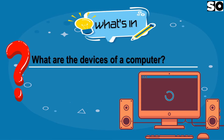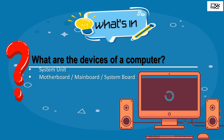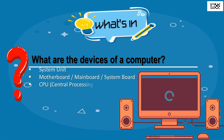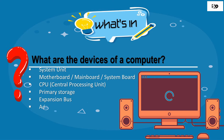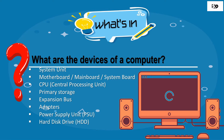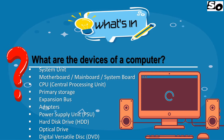What are the devices of a computer? System Unit, Motherboard, Mainboard, or System Board, CPU or the Central Processing Unit, Primary Storage, Expansion Bus, Adapters, Power Supply Unit, Hard Disk Drive, Optical Drive, and Digital Versatile Disk or the DVD.